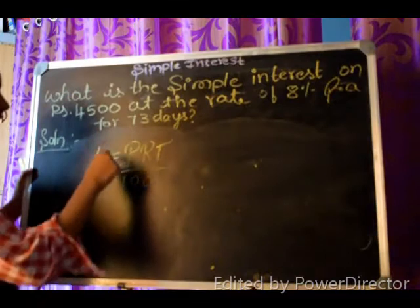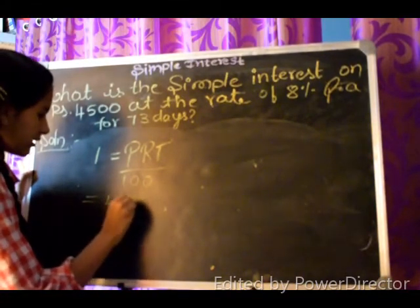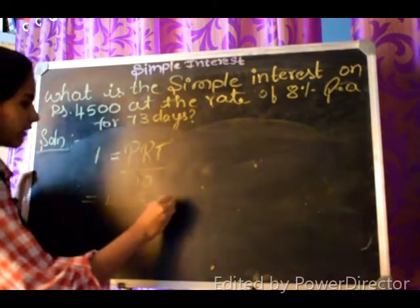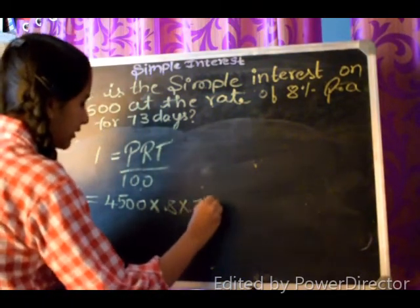So according to given instructions, principal is equal to 4500 into rate is equal to 8% into time period is equal to 73 divided by 365.